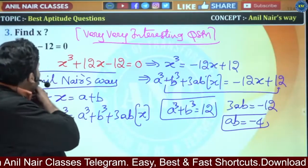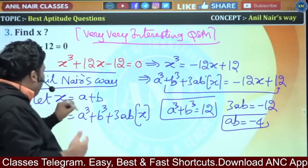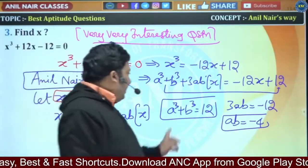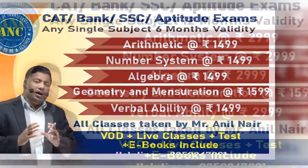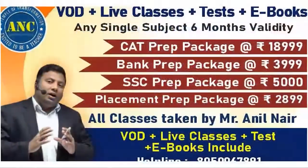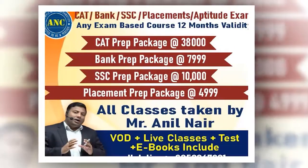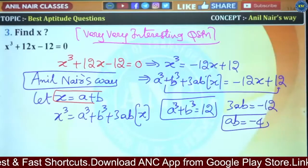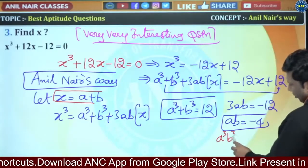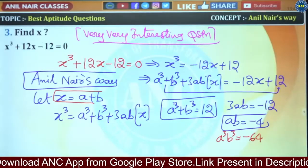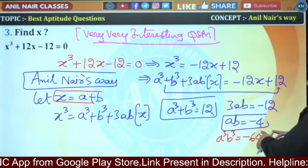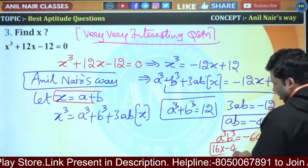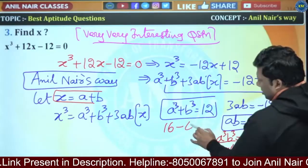We need a + b. Substituting b in terms of a gets complex, so let's try another approach. If ab = -4, cubing gives a³b³ = -64. We have a³ + b³ = 12 and a³·b³ = -64. What are the factors of -64 that sum to 12?